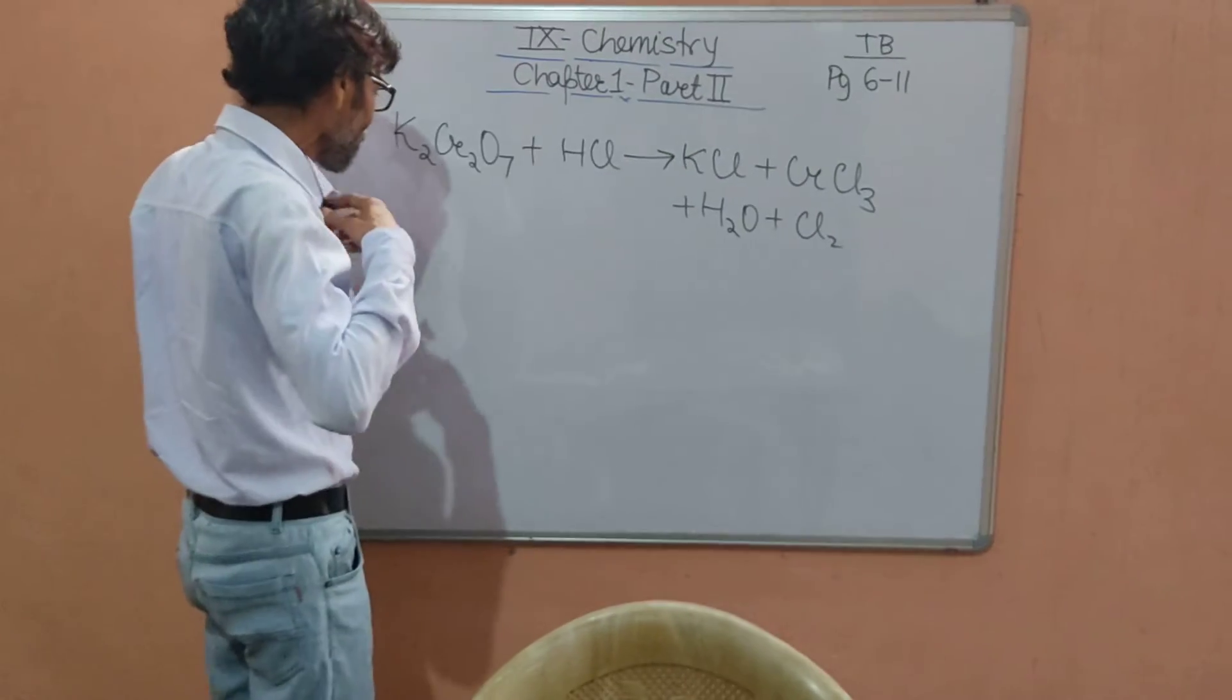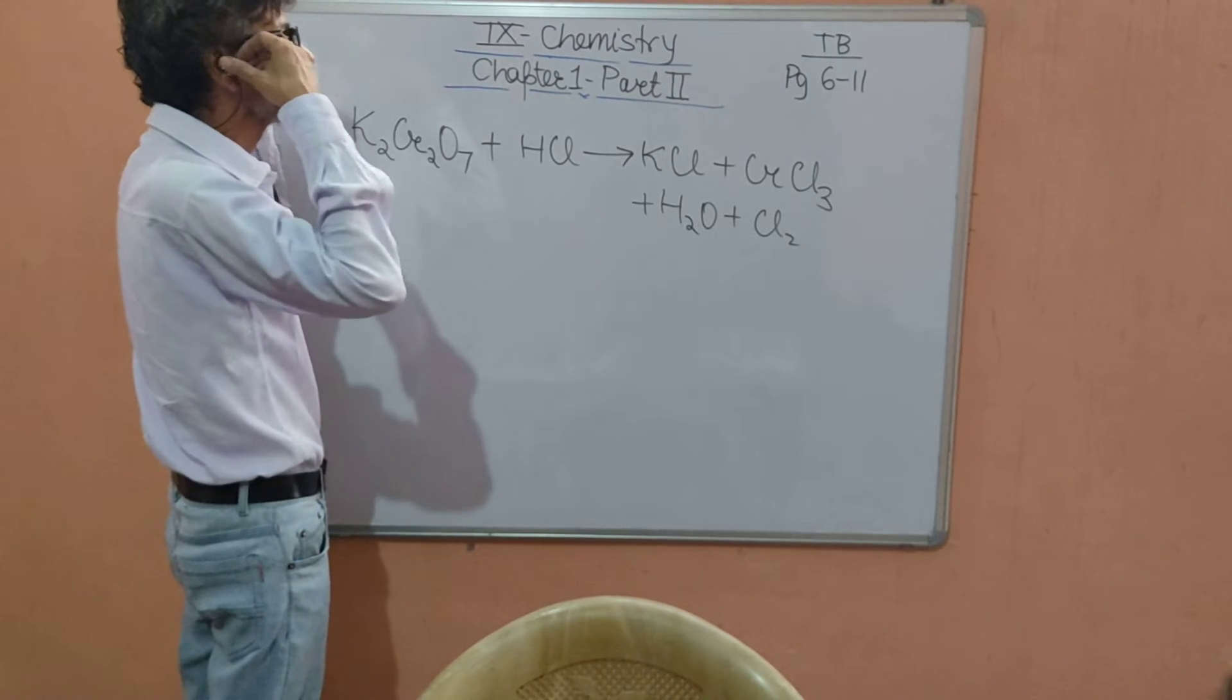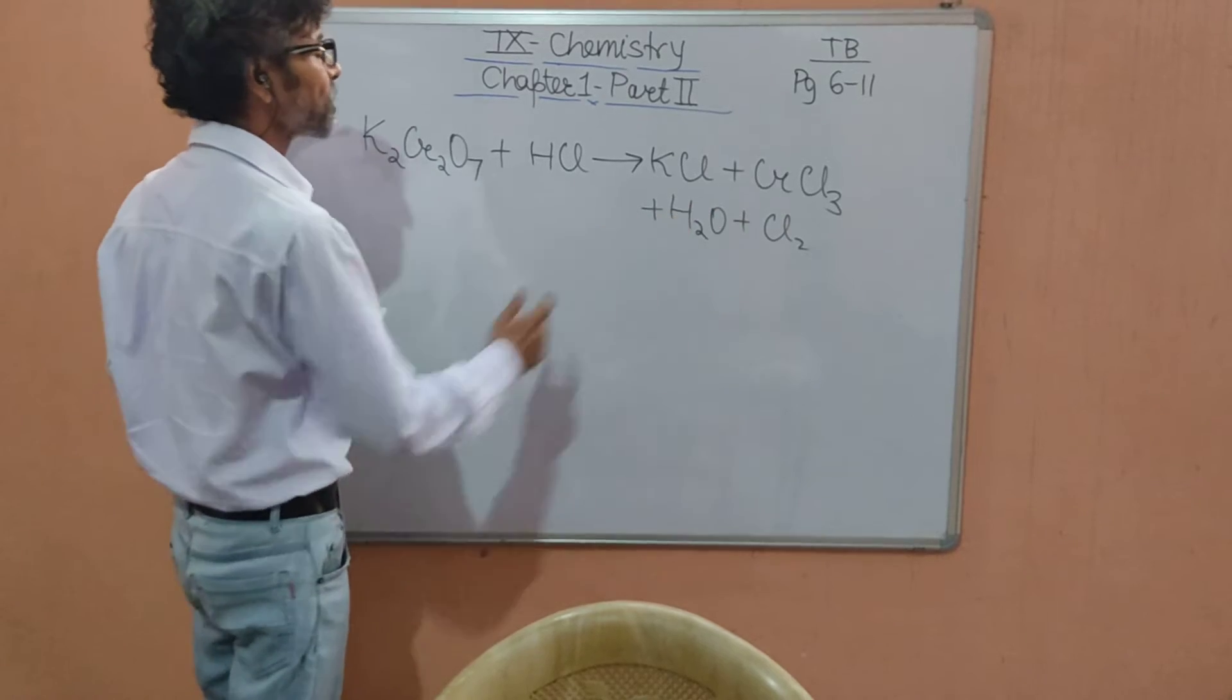K2Cr2O7 plus HCl giving you KCl plus CrCl3 plus H2O plus Cl2.